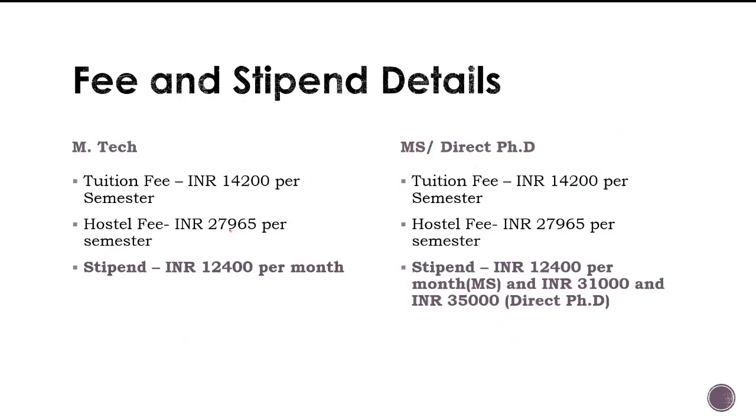And when it comes to fee and stipend, M.Tech has a, the fees is very similar. However, MS and PhD has 11,000, not 14,000, it has a cheaper fees compared to the M.Tech. It's 11,000 and hostel fees is the same. And most attracting part is the stipend where M.Tech gets 12,400 per month for two years. And MS students also get the same amount but for two and a half years. And for direct PhD, it's 31,000 for first two years and 35,000 for remaining period.